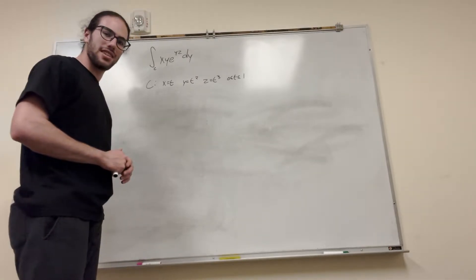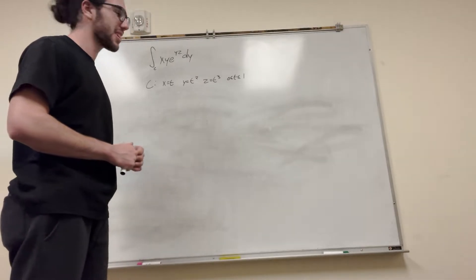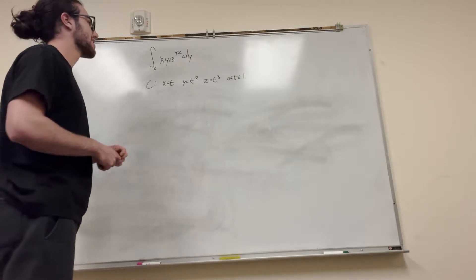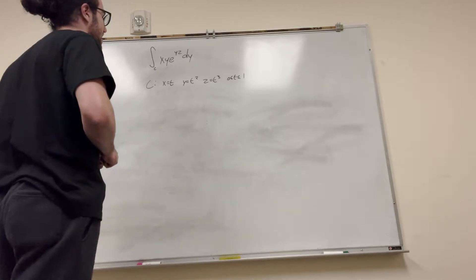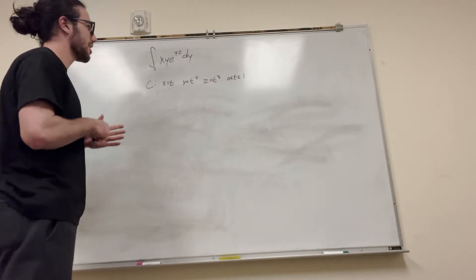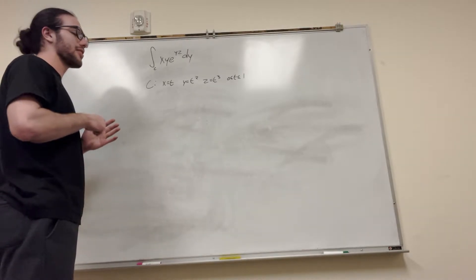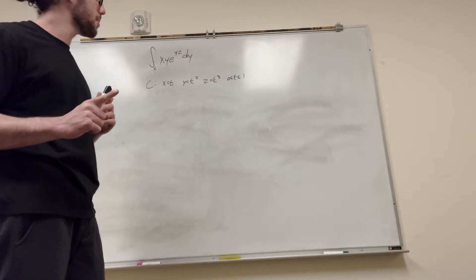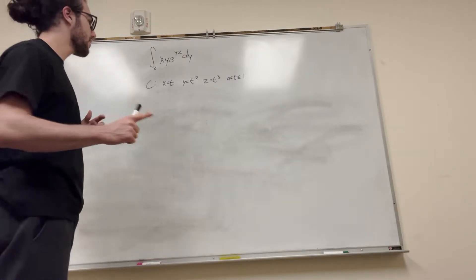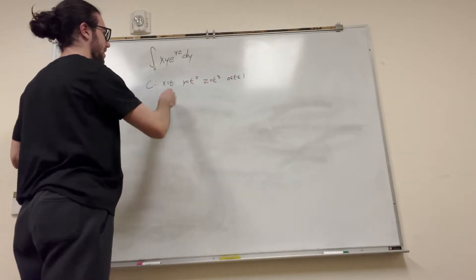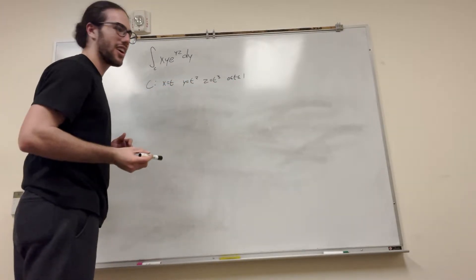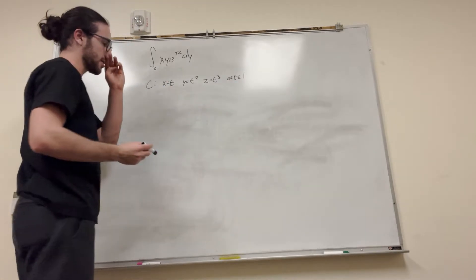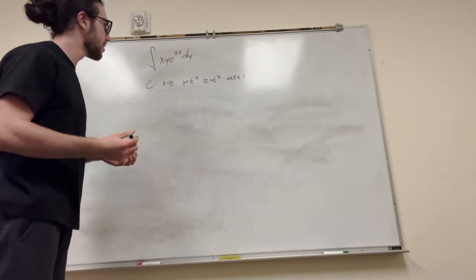Alright, so we're actually not even that far away from solving this, I guarantee you. So we're looking at this, and what we want to do when we have all these variables is we want to turn them all into one variable, and thankfully we have that right here. We have t. All of these variables are equal to t through some form.